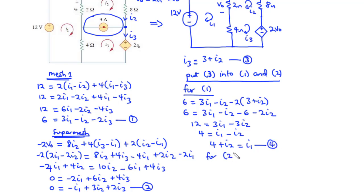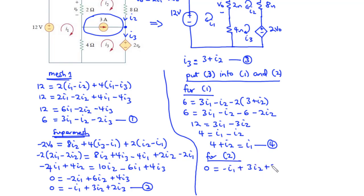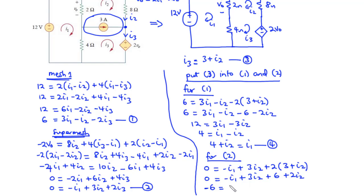For Equation 2, substituting Equation 3: 0 = −I1 + 3I2 + 2(3 + I2), giving 0 = −I1 + 3I2 + 6 + 2I2. Transposing 6 to the left-hand side: −6 = −I1 + 5I2. We call this Equation 5.